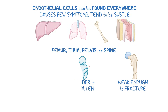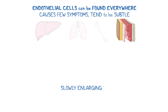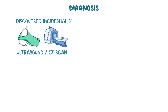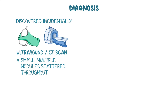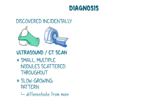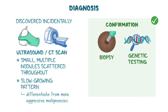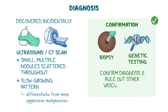EHE can also present as a slowly enlarging lump in muscle or soft tissues, which can be painless or cause a dull ache. As for diagnosis, EHE is often discovered incidentally on an ultrasound or CT scan done for another reason. Typically, it appears as small, multiple nodules scattered throughout the affected tissue. Its radiologic characteristics and slow-growing pattern help differentiate it from more aggressive malignancies. Confirmation of the diagnosis is done through a biopsy, and in many cases, genetic testing identifies specific changes like the TAS-CAMTA1 gene fusion, which helps confirm the diagnosis and rule out other vascular tumors.